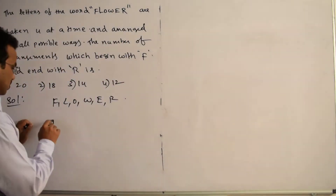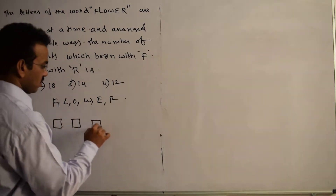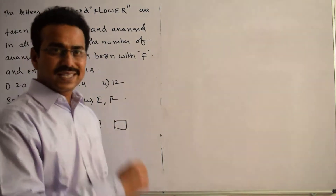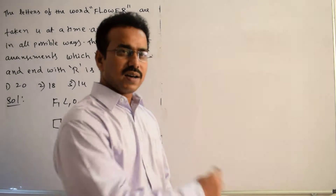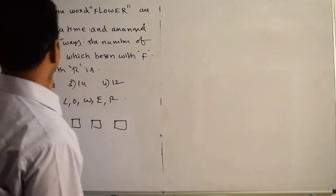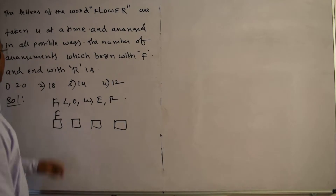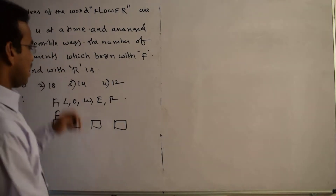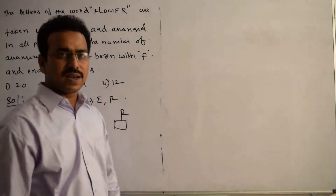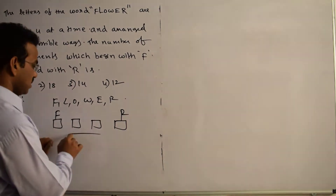Let me take 4 boxes — the first box, second box, third box, and fourth box. Now, given the constraint that all words begin with F, I fill the first box with F, and since they end with R, the last box is filled with R. Now only 2 boxes remain.